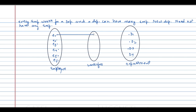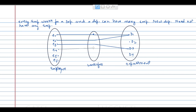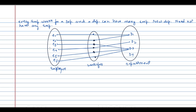Employee e1 works for department d1, employee a3 works for department d1, employee a5 works for department d3, and employee e6 works for department d3. Every employee is assigned a department. Departments d1 and d3 have more than one employee, and the new department d4 has no employees.